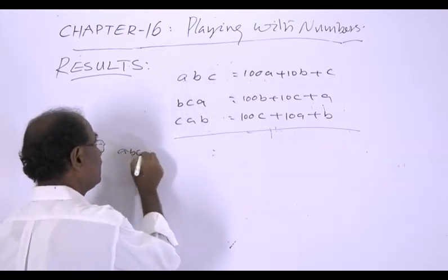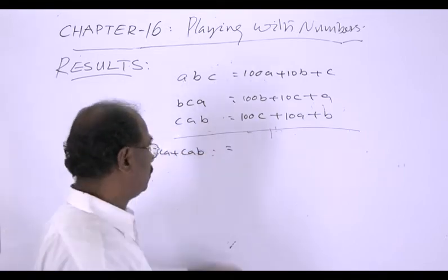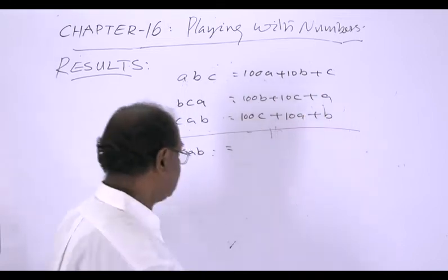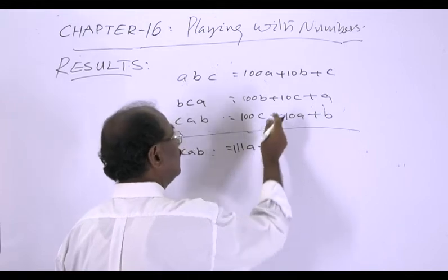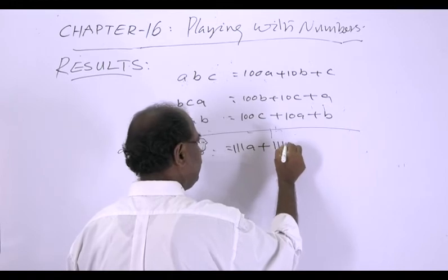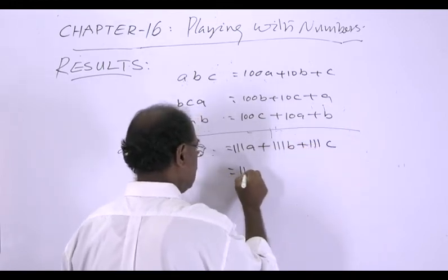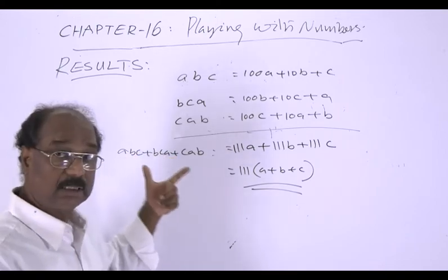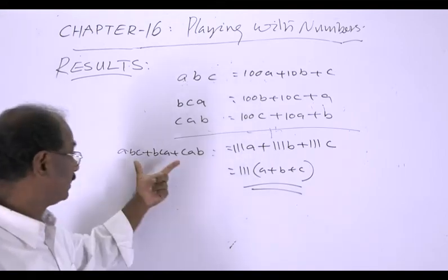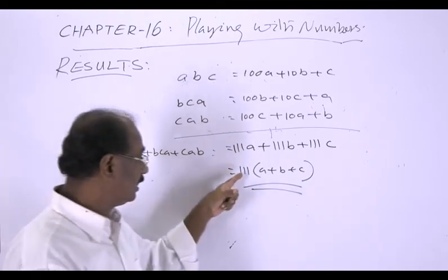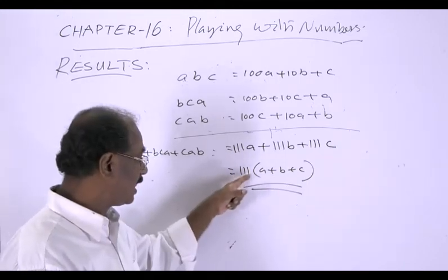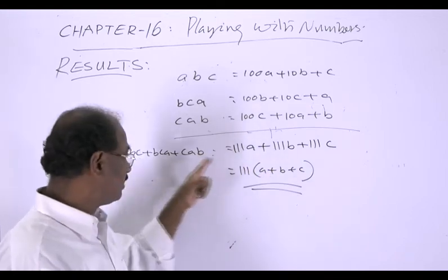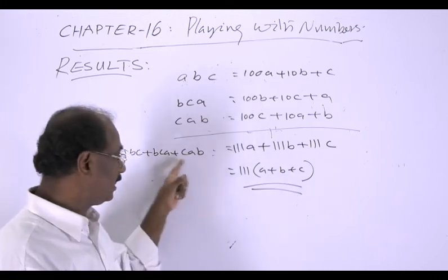Adding these three cyclic permutations: ABC plus BCA plus CAB equals 100A plus 10A plus A, plus 100B plus 10B plus B, plus 100C plus 10C plus C, which equals 111A plus 111B plus 111C, or 111 into A plus B plus C. So the factors of this sum are 111 and A plus B plus C. If the sum is divided by 111 the quotient is A plus B plus C, and if divided by A plus B plus C the quotient is 111.